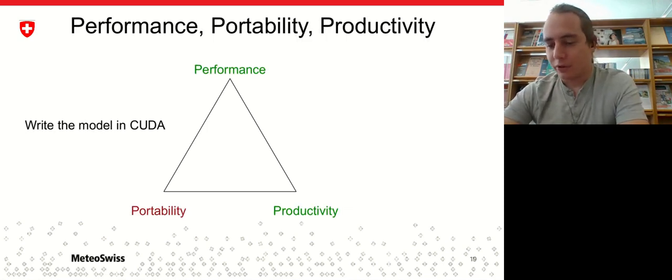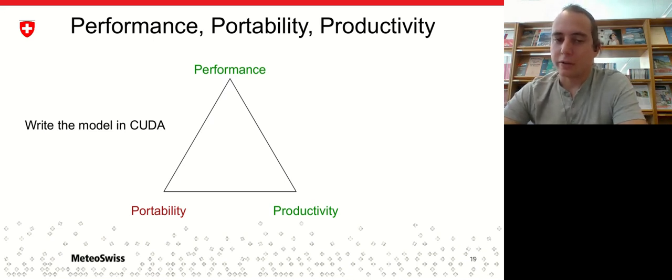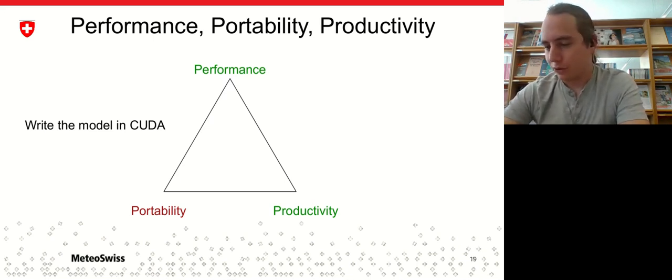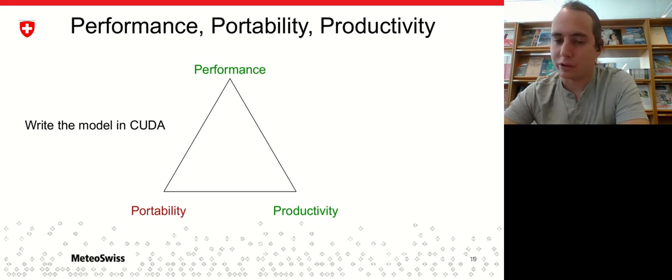And this is something which happens to you in classic scientific computing. Assuming you would write your model down in CUDA. You would be very performant because CUDA allows you to have fine-grain control over NVIDIA GPUs. You would still be quite productive because you only need to support one platform. However, you completely gave up on portability because you can only support machines which have GPUs by only one vendor.